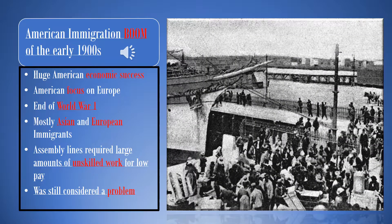With the huge economic success following the end of World War I, and the American public's focus being drawn to affairs in Europe, large amounts of workers, mostly from Asia and Europe, flooded to the United States seeking work and refuge. The United States immigration system of that time was ill-equipped to handle large amounts of immigrants. The casualties sustained in World War I produced a great need for unskilled work, easily fulfilled by new immigrants, yet it was still seen as a problem.